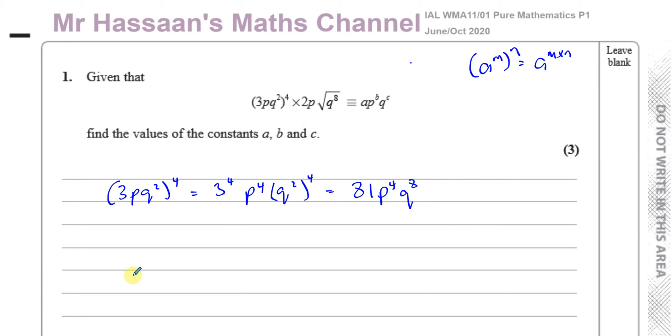And then you're going to have 2P times the square root of Q to the power of 8. Now, when you find the square root of something, the square root of A is equal to A to the power of a half. So this is going to be Q to the power of 8 to the power of a half. So you've got 2P times Q^8 to the power of a half, and again we multiply the powers so you're going to end up with 2P times Q to the power of 4.